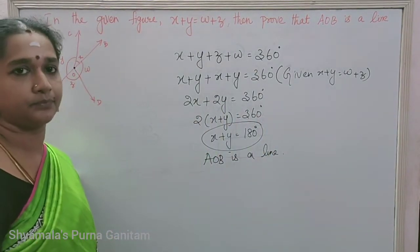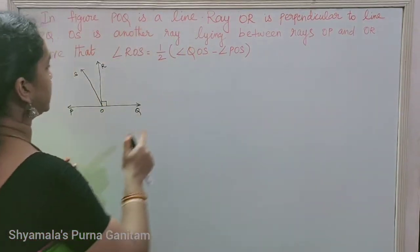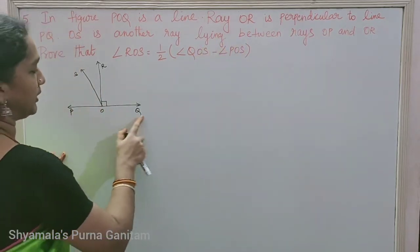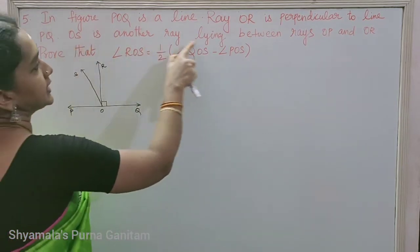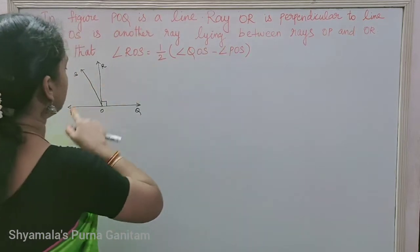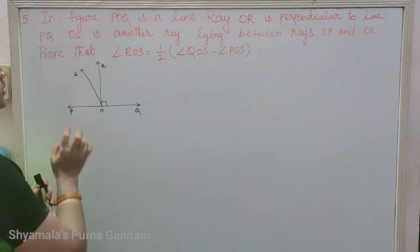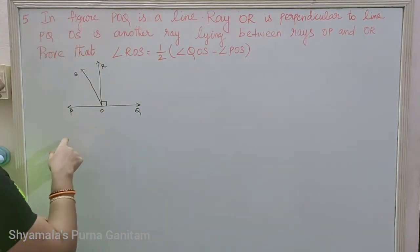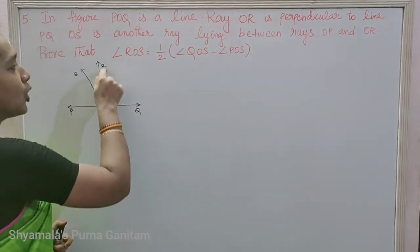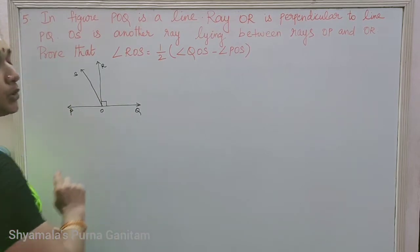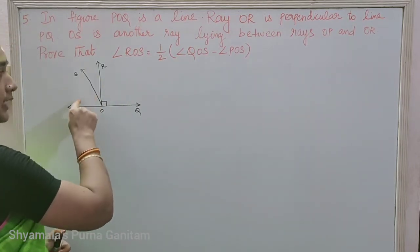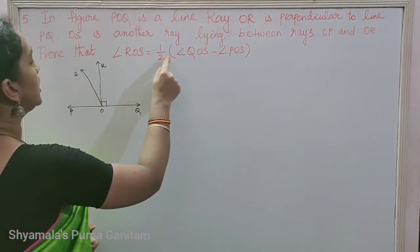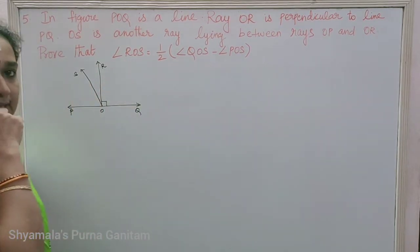Fifth question: POQ is a straight line. Ray OR is perpendicular to PQ. OS is another ray lying between rays OP and OR. Prove that angle ROS equals half of (angle QOS minus angle POS).